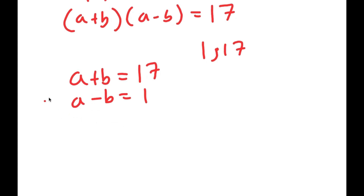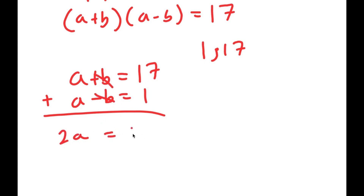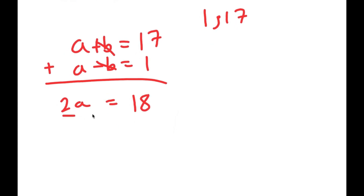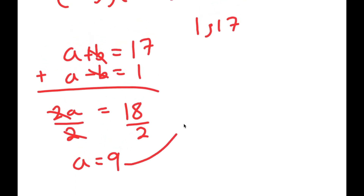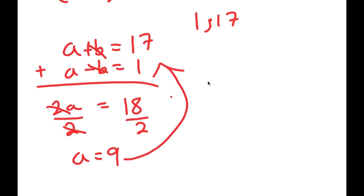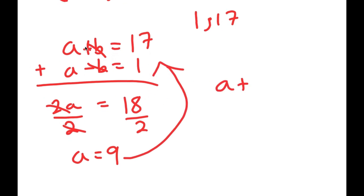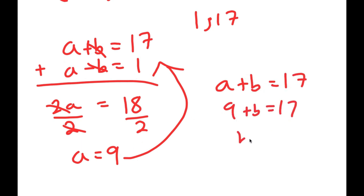So now I'm going to add these two equations together. a plus a is 2a, b minus b is 0 so those cancel out, and 17 plus 1 is 18. So I get 2a equals 18, and dividing both sides by 2, I get a is equal to 9. Plugging a equals 9 into a plus b equals 17, I get 9 plus b equals 17, meaning b is equal to 8. So a equals 9 and b equals 8.